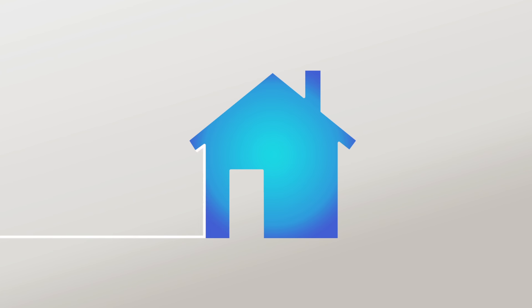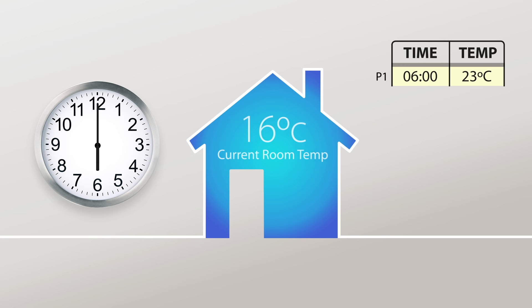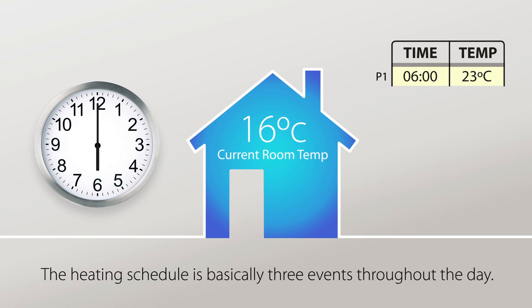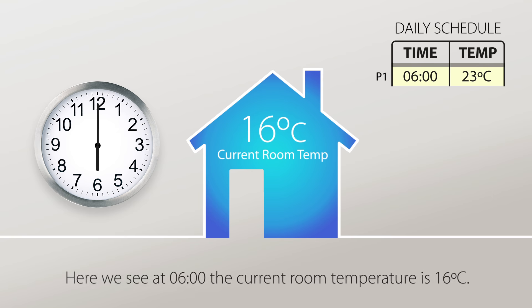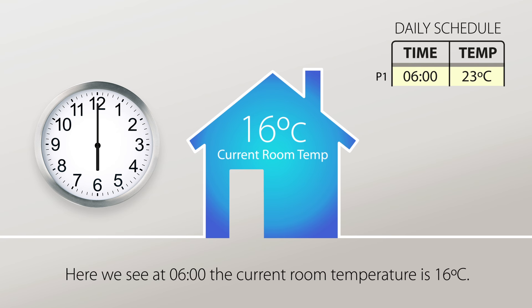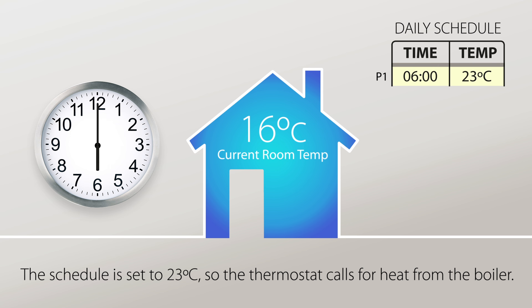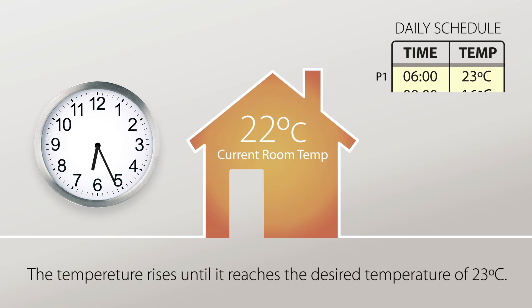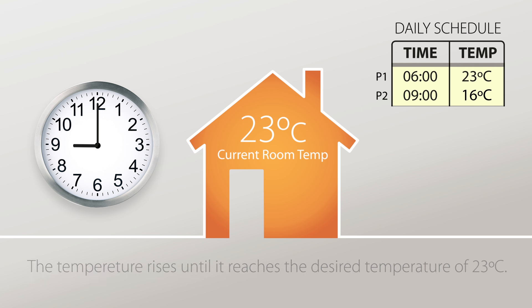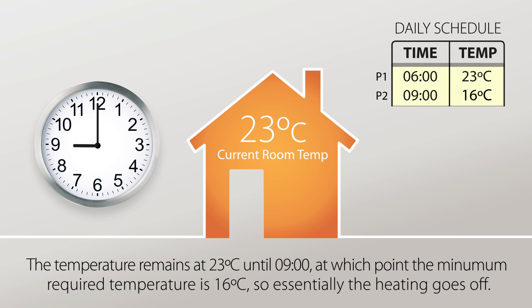This is an example of a typical heating schedule. At 6am the current room temperature is 16 degrees. Program one is the first on time and temperature — the temperature is set to 23 degrees, so the thermostat calls for heat from the boiler. The temperature rises until it reaches 23 degrees. Program two is the off time and temperature: at 9am the minimum temperature required is 16 degrees, so essentially the heating goes off.